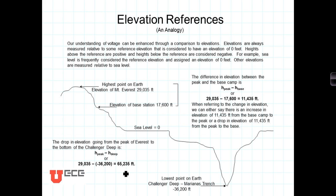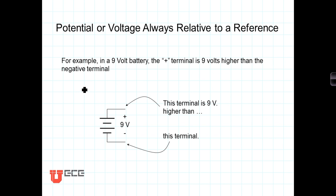The point here is that elevation is relative. We could have chosen to let our lowest elevation be zero; under those circumstances, sea level would be at 36,200 feet and the elevation of Everest would be 65,235 feet. In a similar way, voltage or the potential within a circuit is always measured relative to another reference point.